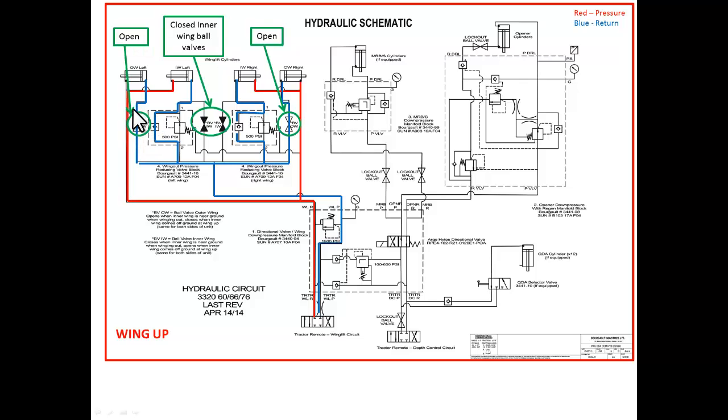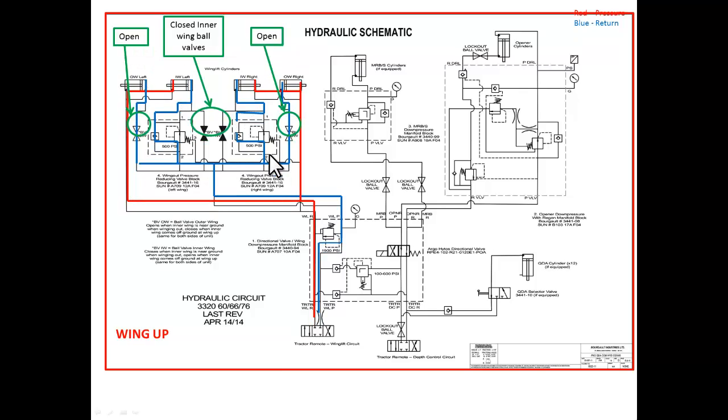The ball valve for the outer wing is open and the internal check valve allows the oil to bypass the pressure reduction for the inner wings. The reason we don't need to worry about these inner wing ball valves being closed is the oil will always take the path of least resistance which is lifting that lighter outer wing. And the inner wing won't start to lift until the outer wing is all the way up.